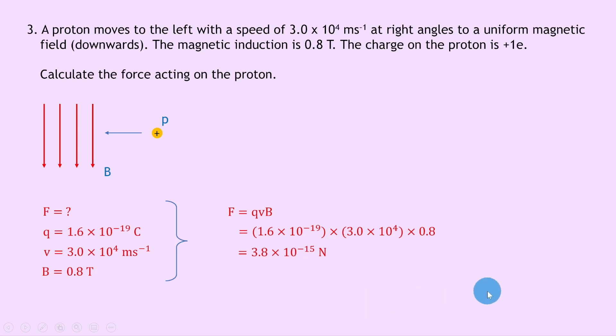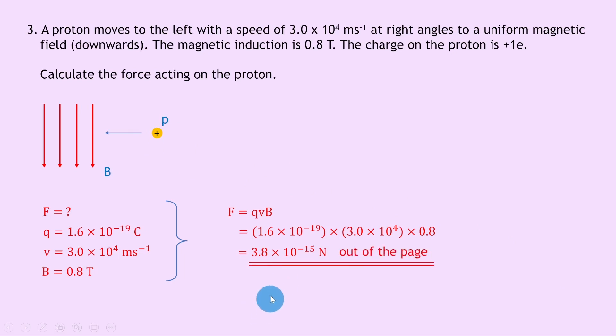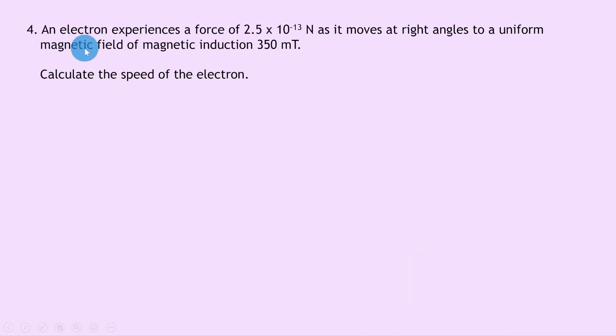For direction using the right-hand rule: point your index finger downward, move your hand so your middle finger points to the left — your thumb points into the page. But because this is a positively charged particle, we need to reverse the direction, so from into the page to out of the page. Final answer: 3.8 times 10 to the minus 15 newtons out of the page.